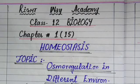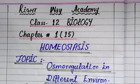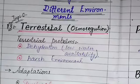Assalamu Alaikum students, and welcome to Right Way Academy. This is Class Second Year Biology, Chapter One: Homeostasis. Last time you saw osmoregulation in different environments. Today we will discuss osmoregulation in the terrestrial environment. This is a very important question from the board point of view, so listen carefully.